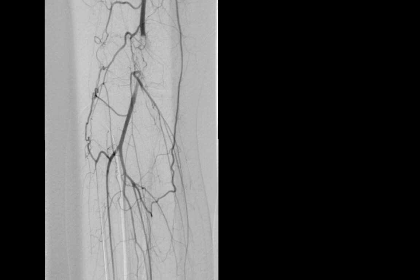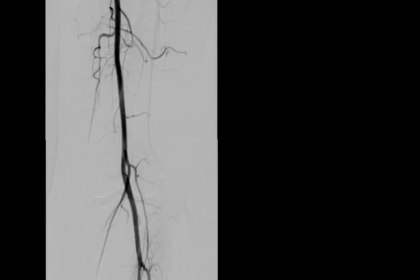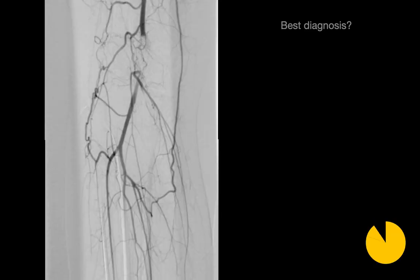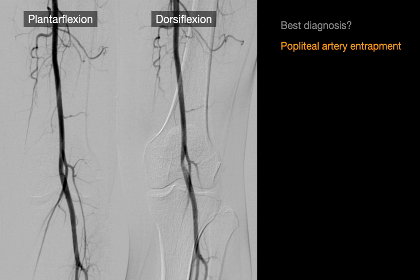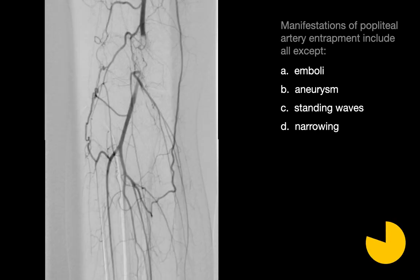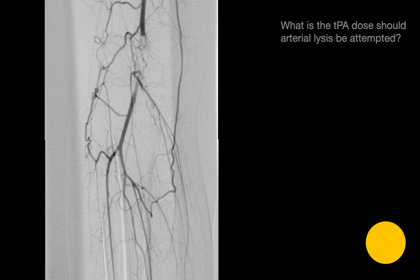An angiogram was performed on the left side with the foot in plantar flexion and dorsiflexion. The best diagnosis in this case is popliteal artery entrapment. We see stenosis and focal medial deviation of the left popliteal artery just above the knee on dorsiflexion. Manifestations of popliteal artery entrapment include standing waves, emboli, aneurysm, and narrowing. The preferred tPA dose should arteriolysis be attempted is one milligram per hour.